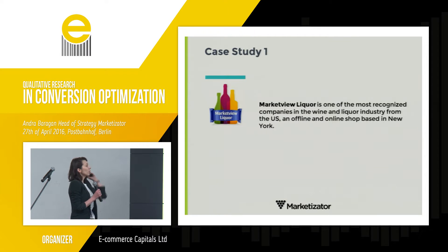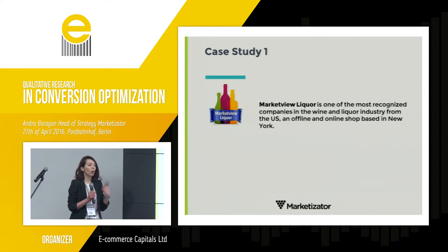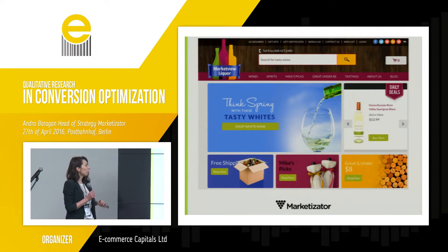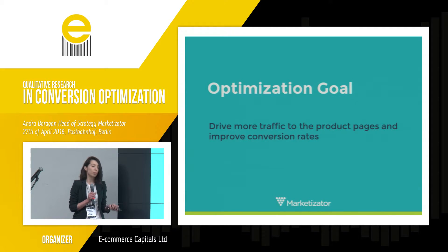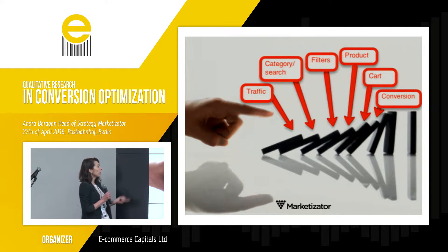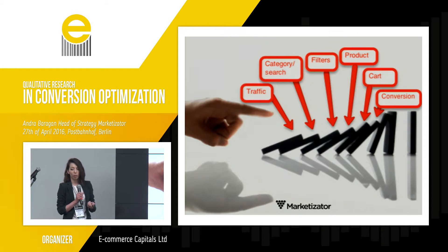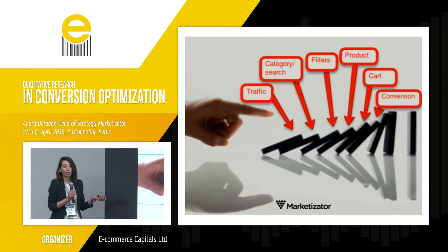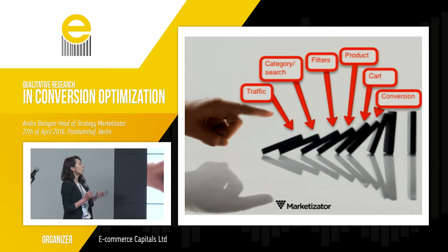This leads us to our first case study, which is for Marketville Liquor — a top-selling wine shop, online and offline, based in New York City. They wanted to improve their product pages, drive more traffic to them, and improve conversion rates. If you look at your funnel like a game of dominoes, traffic lands on your homepage or landing page, you want them to reach category pages, use filters, narrow down choices, and get to the product pages. If one piece is missing, you don't reach the final piece — the conversion. So we focused on the product pages.